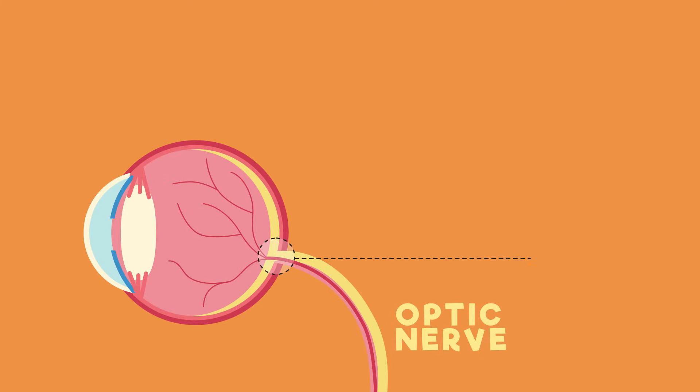Where the optic nerve connects to the eye, there are no rod or cone cells. This is known as the blind spot.